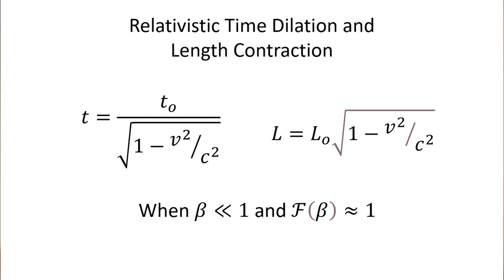Length contraction equals the initial length times the square root of one minus V squared over C squared. This applies when the warp factor beta is much less than one and the transition function is approximately equal to one.